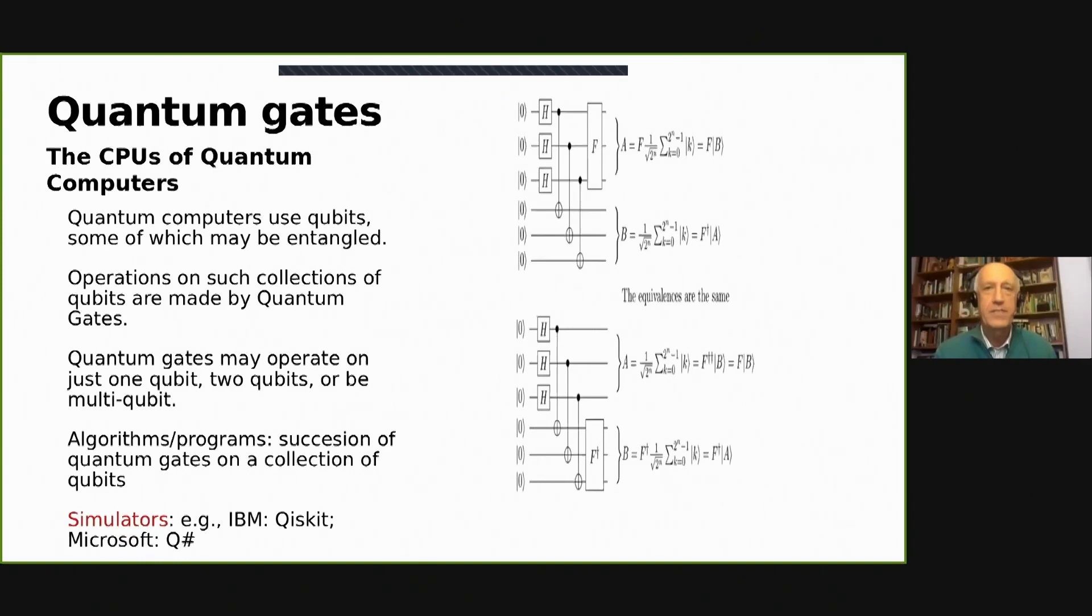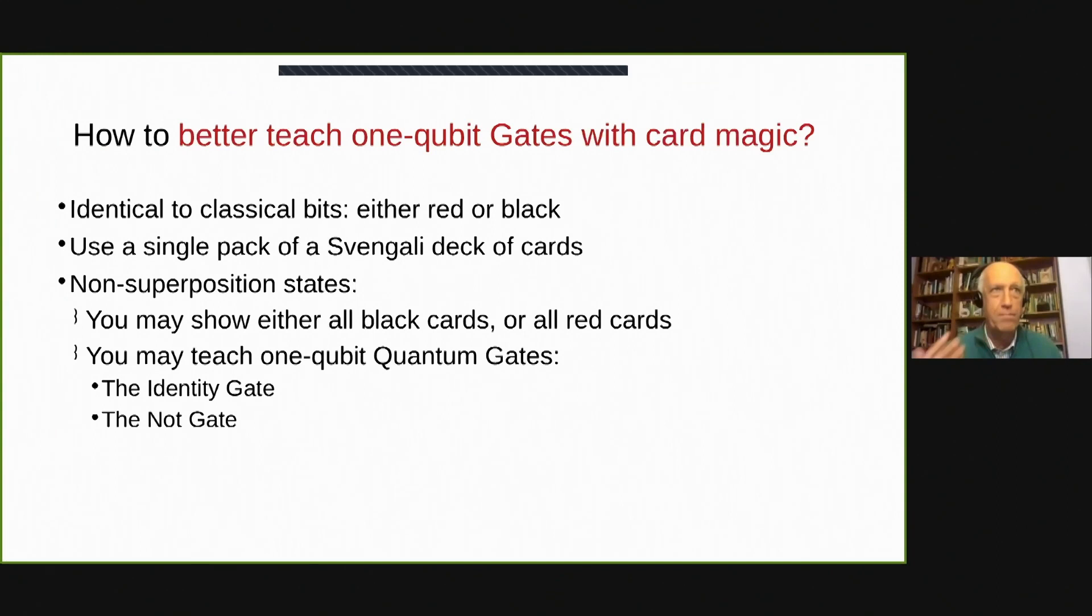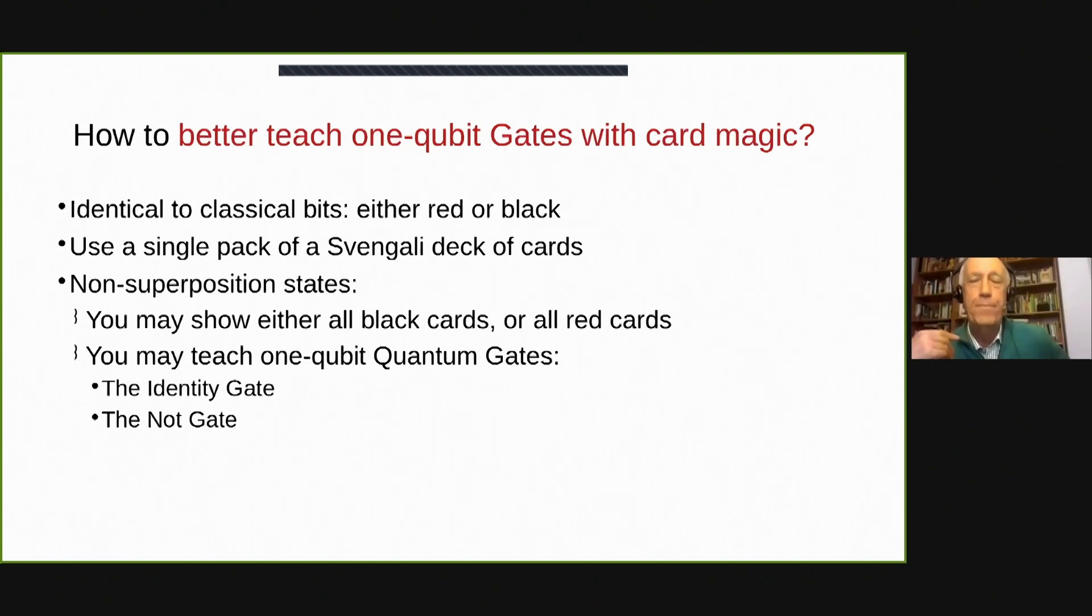And we can also talk about quantum gates. Quantum gates are similar to normal classical operators in classical computing with bits. But how can we really teach well with qubit gates and quantum magic? So, we have a stack of cards and that is just the, it illustrates 52 values of the probability of getting a measure.